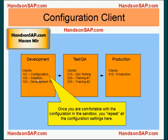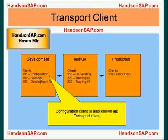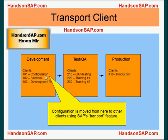Once you're comfortable with the configuration in your sandbox client, you repeat all your configuration settings in the configuration client. This is your main starting point — the configuration client. The configuration client is also known as a transport client, because configuration is moved from here to all other SAP environments. That's why it's also called a transport client, and the way configuration is moved is through a transport feature in SAP — a vehicle to move configuration from one client to the other.